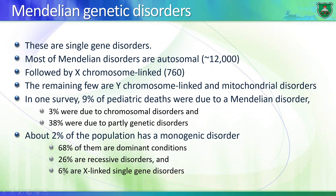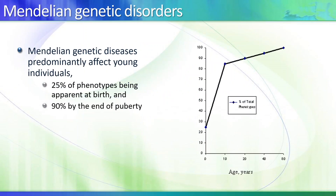In terms of numbers, 2% of the population has a monogenic disorder. For the most part they are dominant, some are recessive, and 6% are X-linked. You don't have to memorize these numbers specifically — you just need to know which is predominant and which is minor relative to the others.